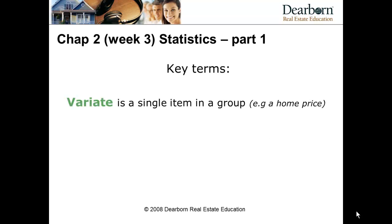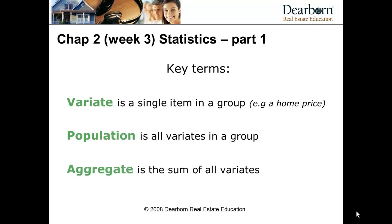With statistics, there's terminology we'll review and talk about how it applies to the common types of statistical work we'll do. When we're talking about statistics, it means we're taking a sample of something — a sample of the home prices that have sold in a neighborhood. Variate is the name for an individual item, so an individual home sale price or individual home size. Population is all of the variates in the group you're sampling, and aggregate is the sum or total of all those variates.